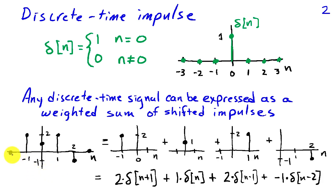I've got a signal which is 0 prior to n equals minus 1, and then it has values 2, 1 at n equals 0, 2 at 1, and minus 1 at n equal 2.